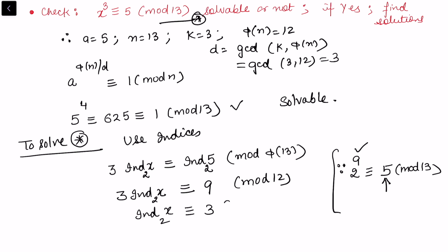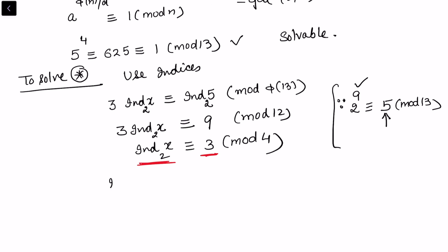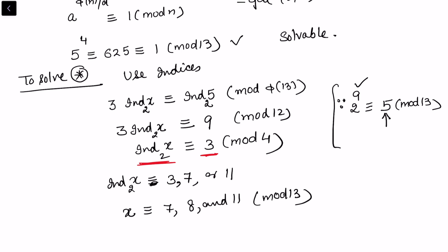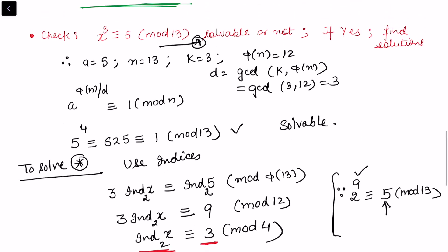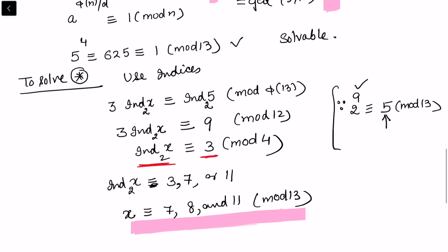Cancelling 3 on both sides gives ind(x) ≡ 3 (mod 4). The possible values for ind(x) are 3, 7, or 11, referring to the index table from the previous video. Correspondingly, x ≡ 7, 8, and 11 (mod 13). This confirms there are d = 3 incongruent solutions modulo 13, as expected since d = 3.